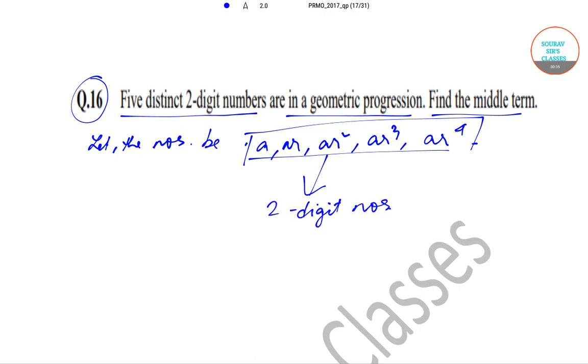If they are two-digit numbers, that implies the common ratio will be equal to 2/3 or 3/2. Since if we take powers, 2 to the power 4 will be 16.